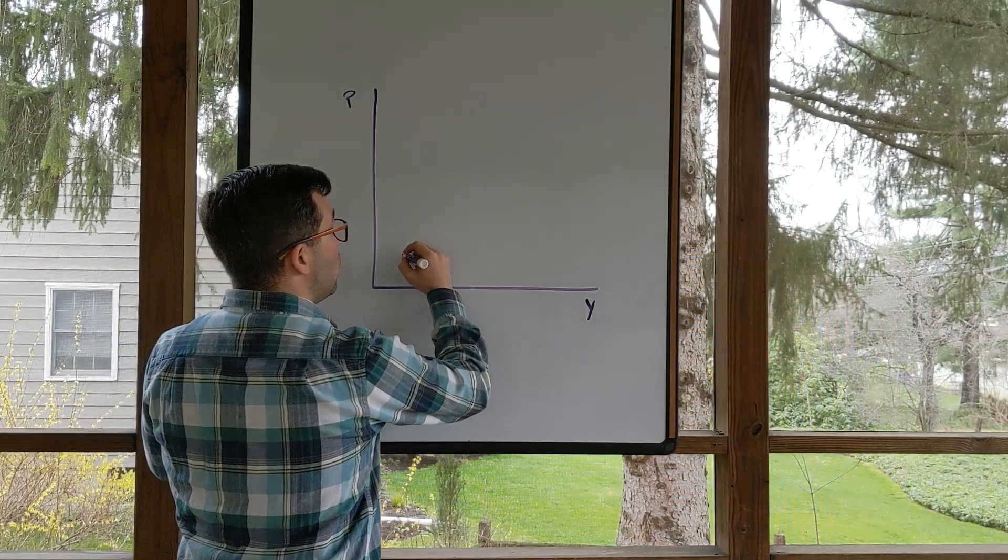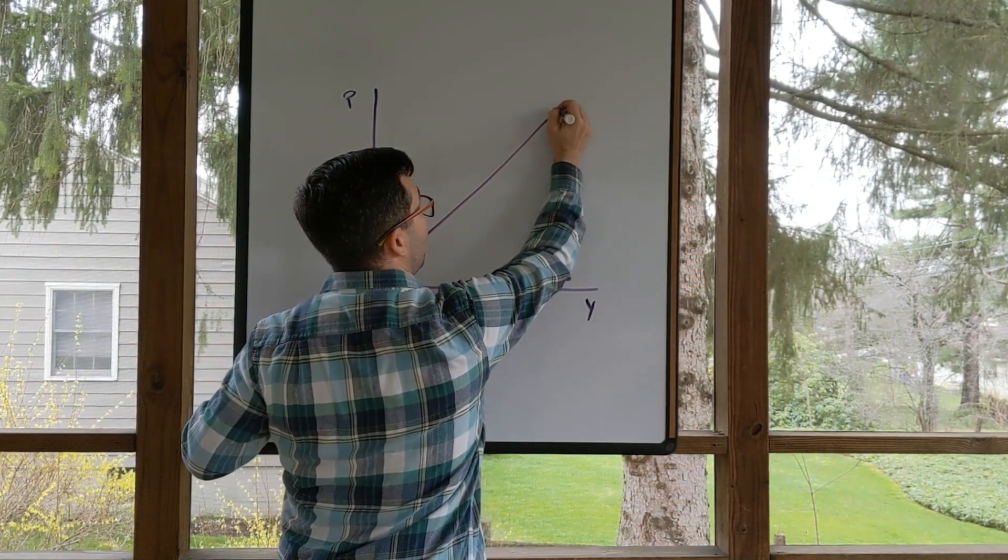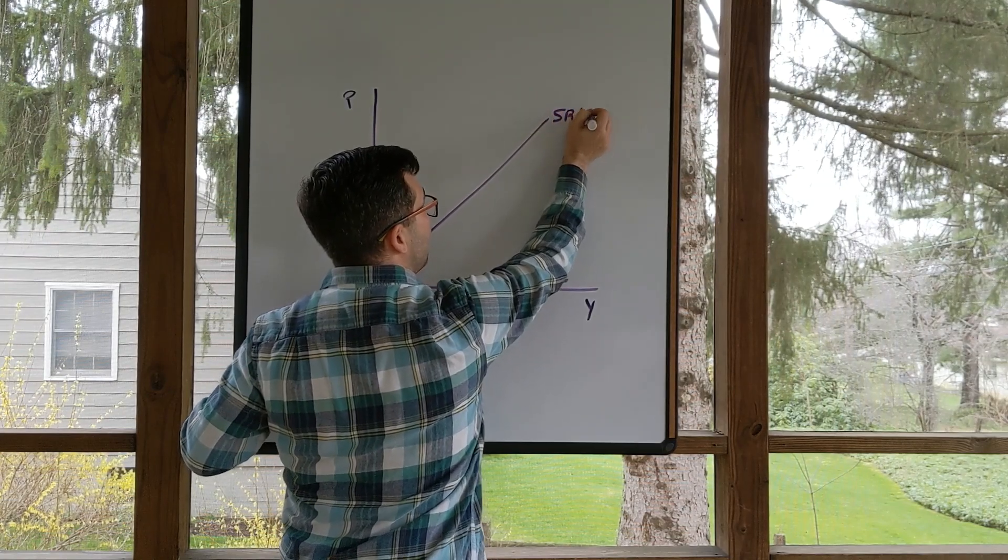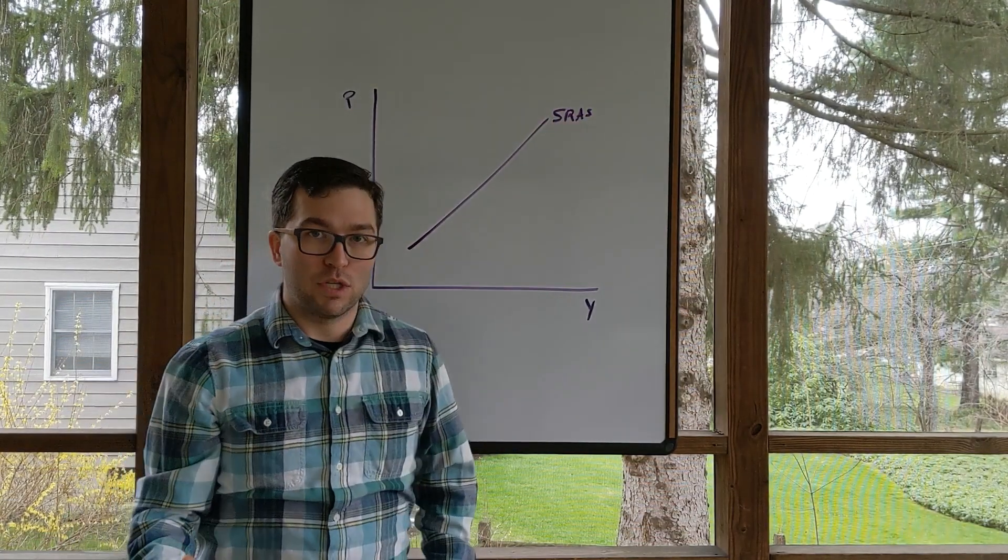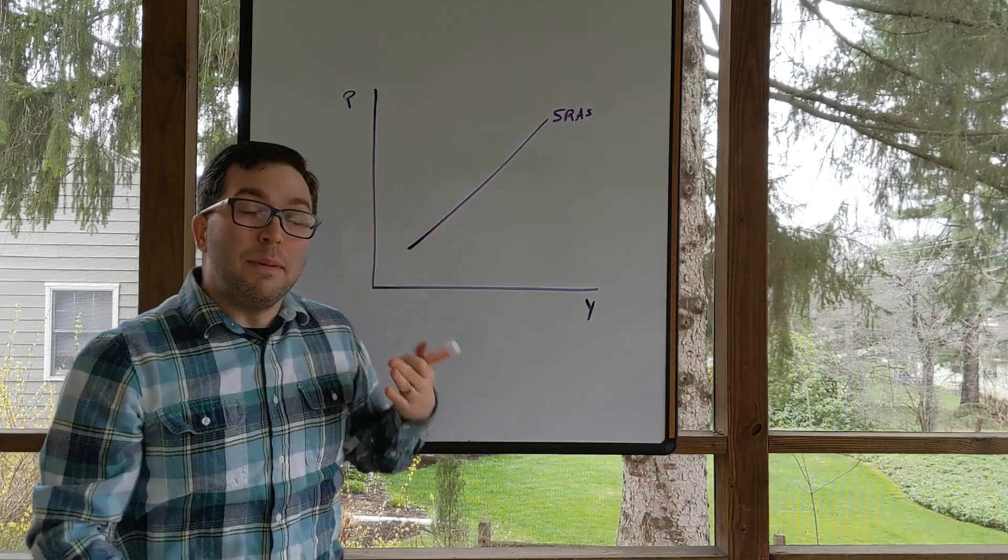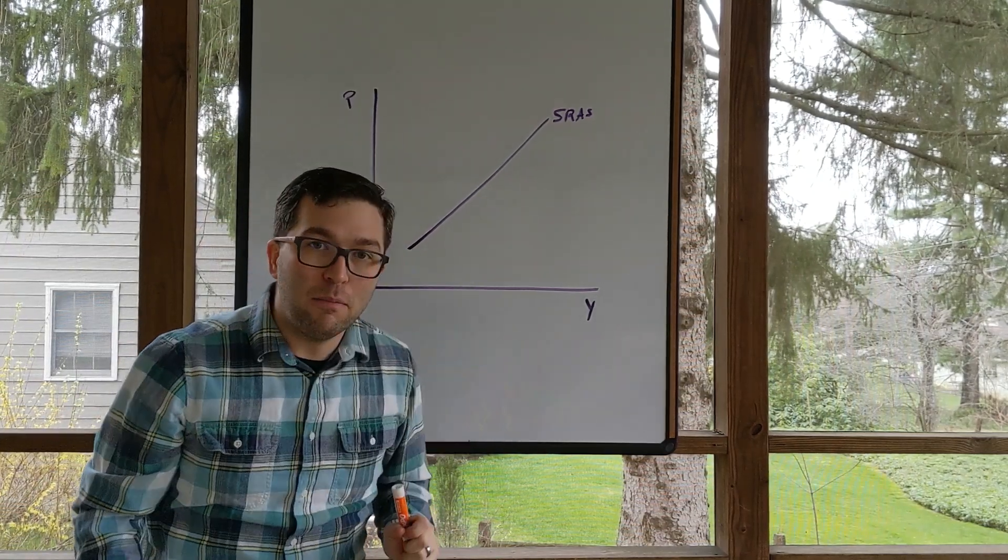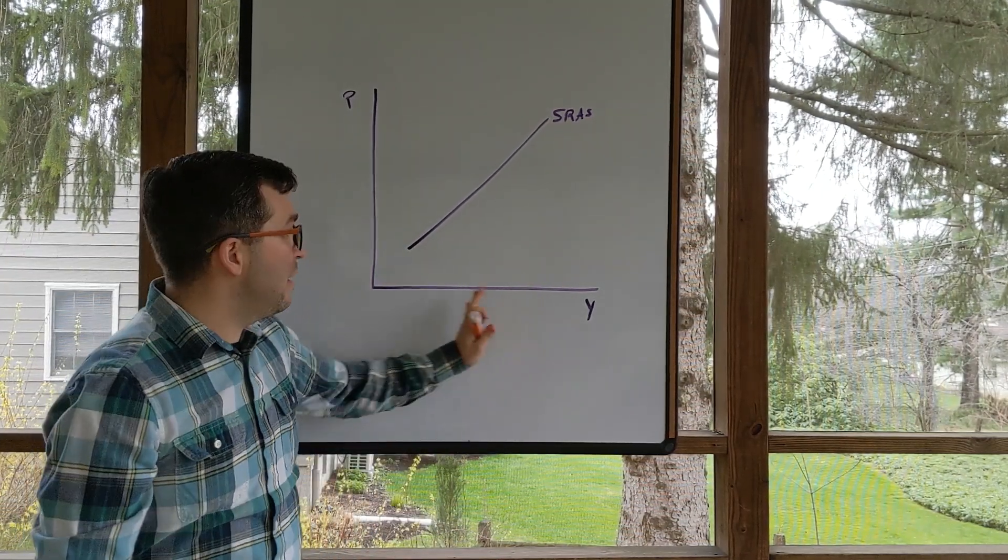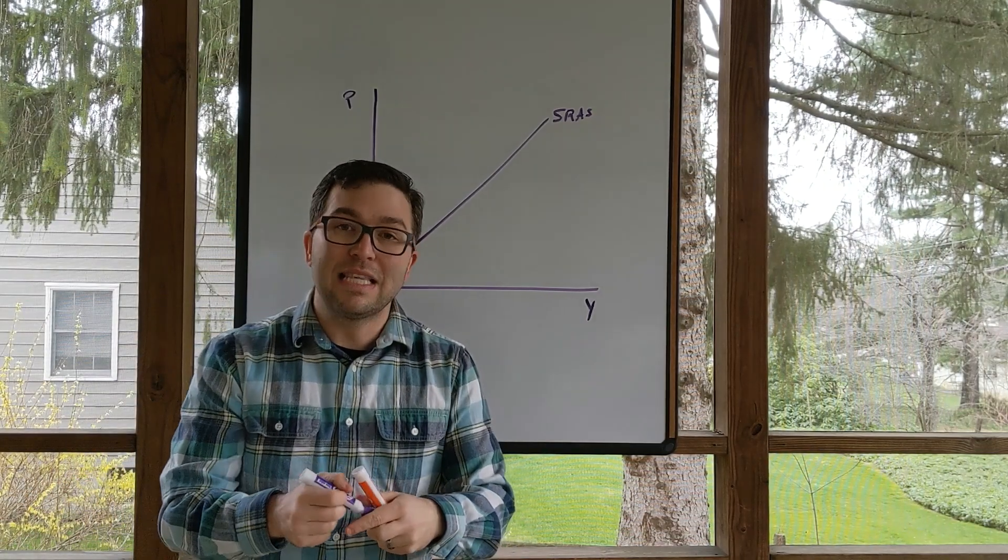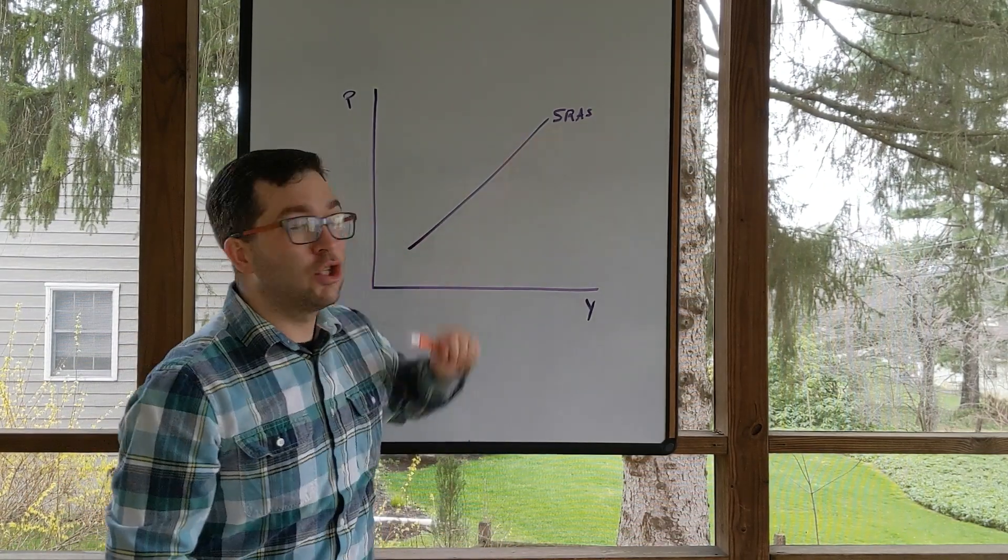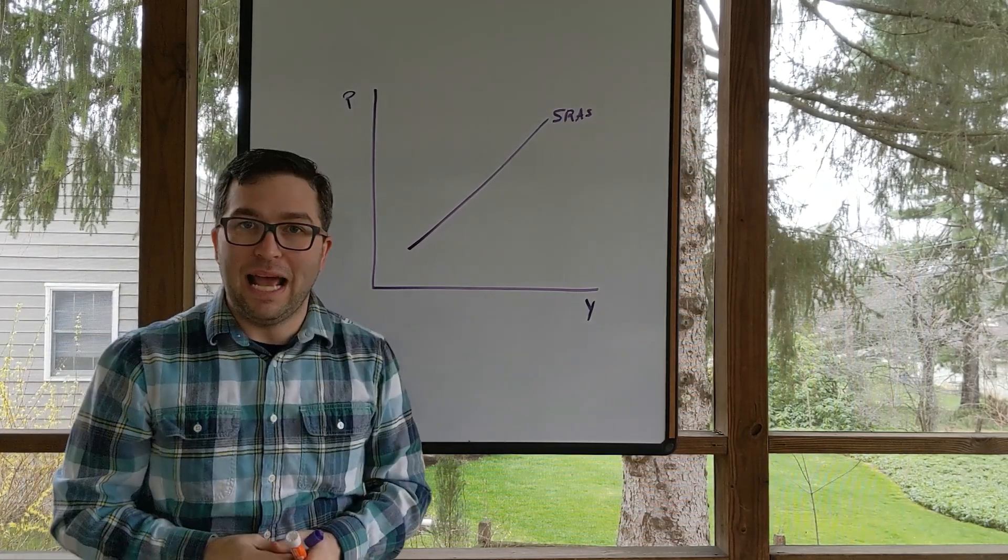We're going to have an upward sloping short run aggregate supply curve. When prices rise, it's beneficial to increase output. When prices fall, it's beneficial to decrease output. So there is that positive relationship in the short run between the price level and output.